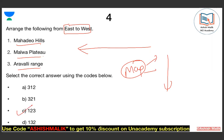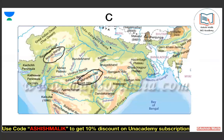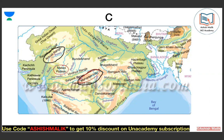Going East to West, you will first encounter Mahadev Hills, which is an extension of Satpura. Then you will have Malwa Plateau. And then Aravallis as you move further West. Map practice is very important for these kinds of questions.